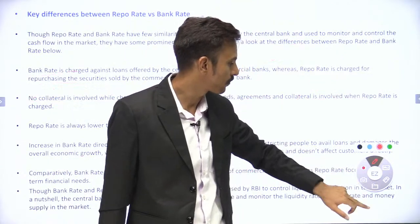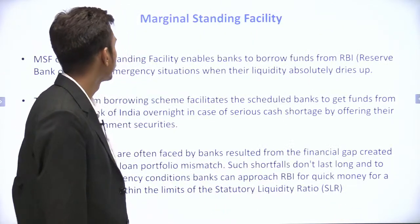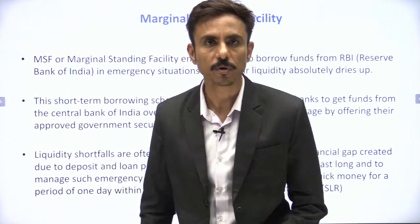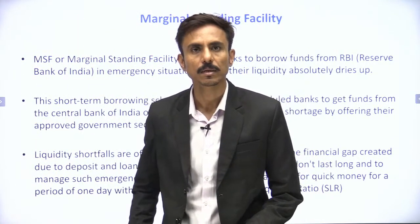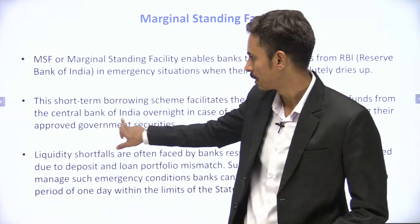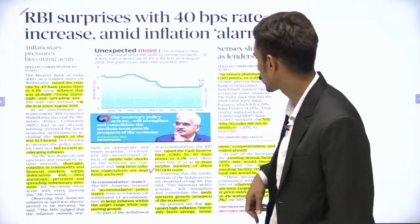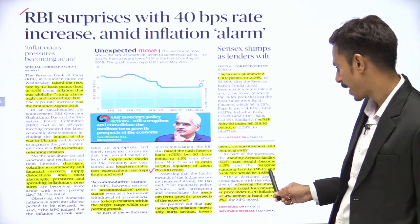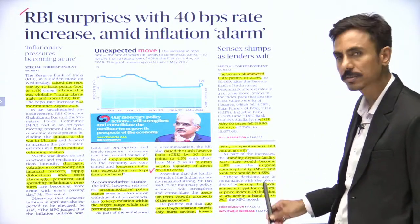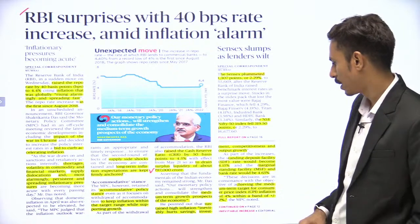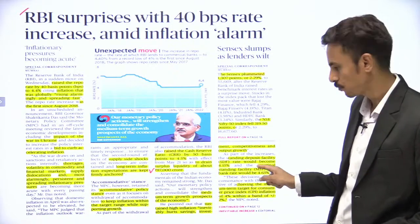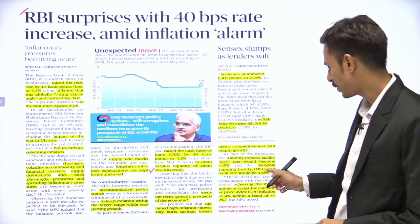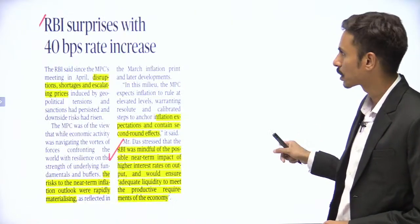The Marginal Standing Facility — MSF — has also been increased to 4.65%. The bank rate has also been increased to 4.65%. Let us understand MSF. You may have heard the concept of SLR — Statutory Liquidity Ratio.